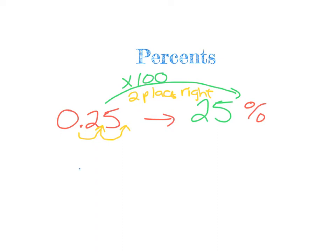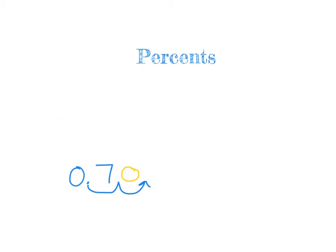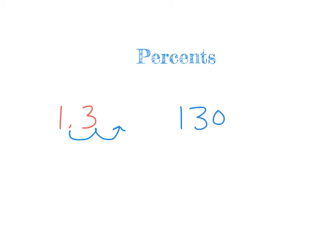If I take the decimal 0.7, I move it two places to the right. That empty space gets filled with a zero, making this 70%. Even with a large number — if I have 1.3, I still move two places to the right, giving 130%. Decimal to percent is always two places to the right because you're technically multiplying by 100.